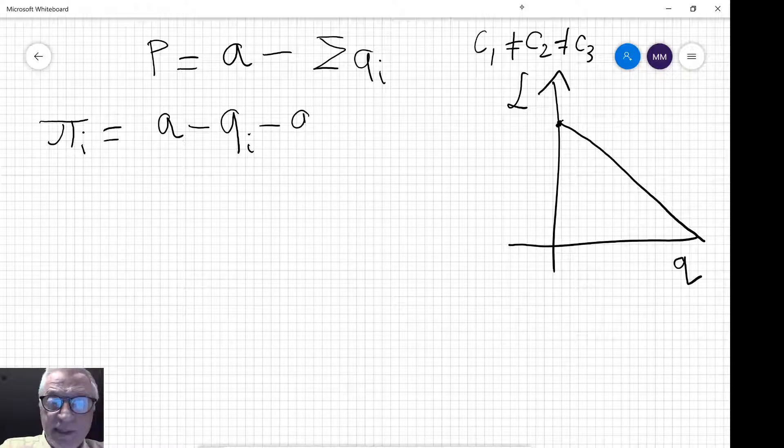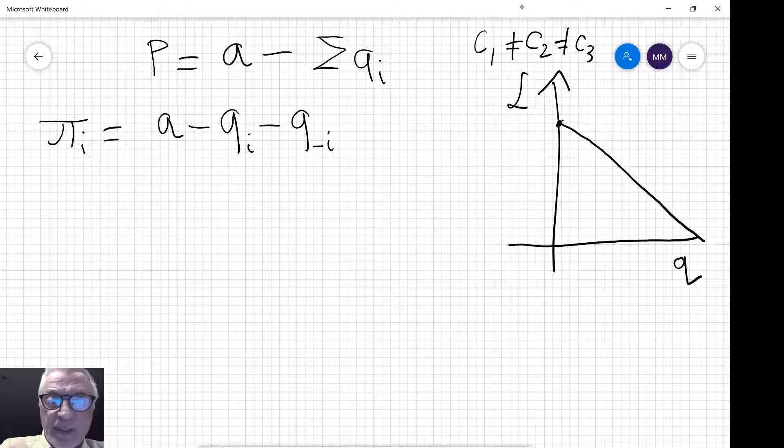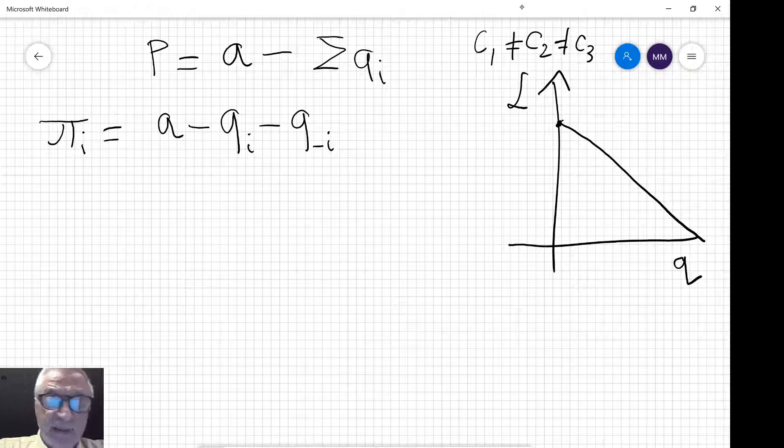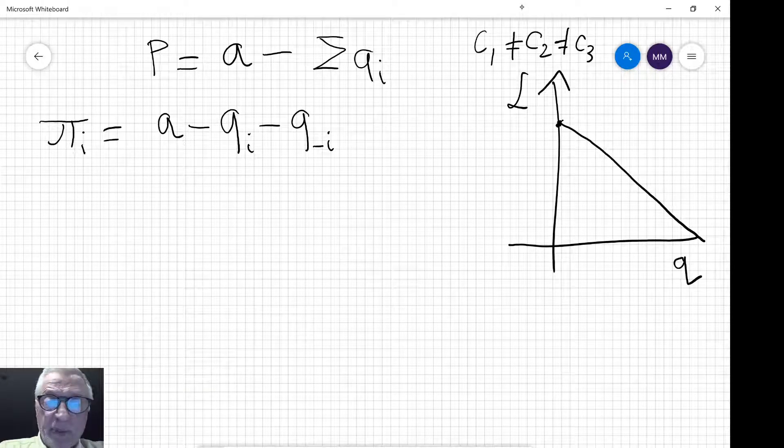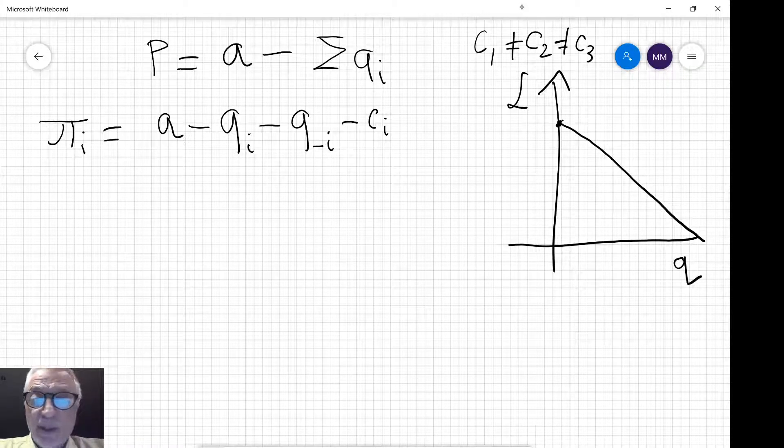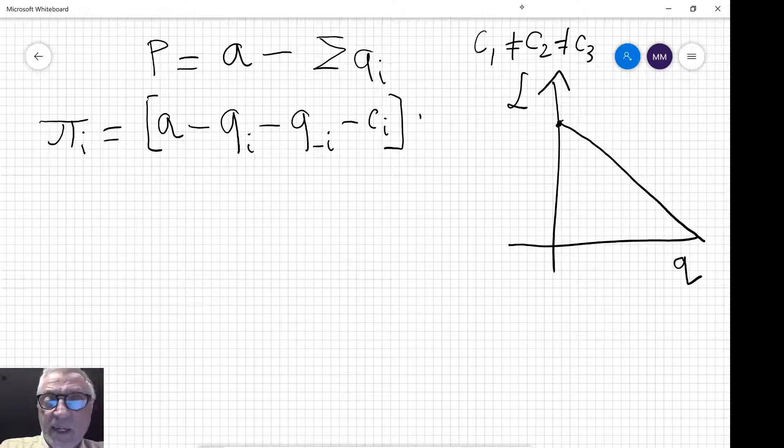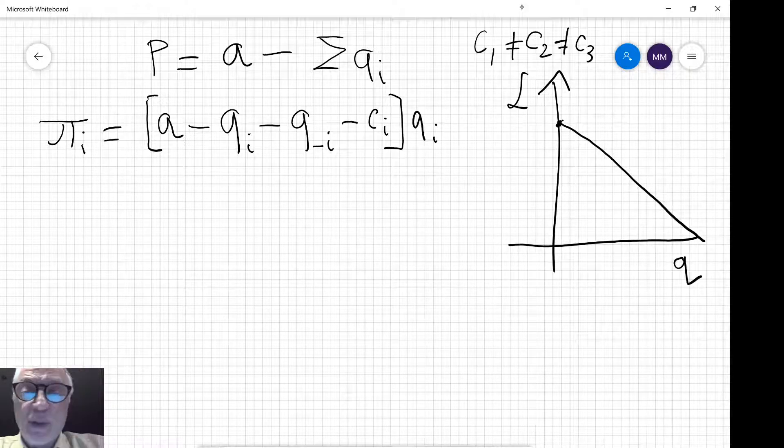So that is the price. If I subtract the constant marginal cost, that is profit per unit, and if I multiply that by the amount sold, that will give me the profit of firm I.